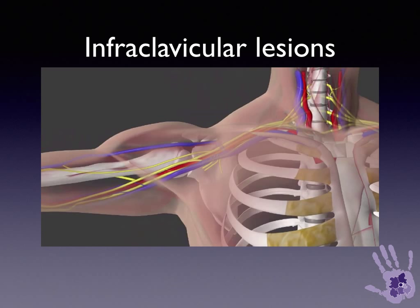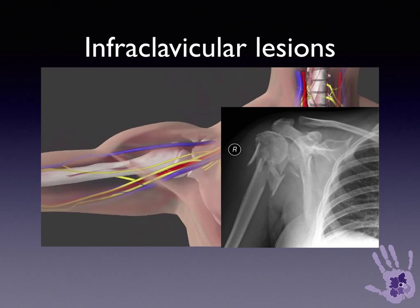Injuries that occur below the clavicle tend to be associated with fractures and dislocations around the shoulder girdle — fractures of the humeral neck, fractures of the scapula, and fractures of the acromion process.